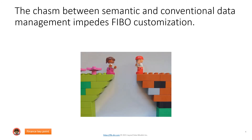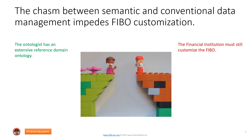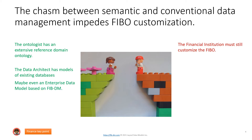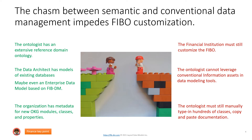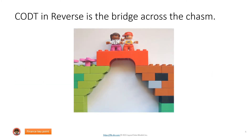There is a chasm between semantic and conventional data management, and that chasm impedes FIBO customization. The ontologist has an extensive reference domain ontology; however, the financial institution must still customize the FIBO. The data architect has models of existing databases, maybe even an enterprise data model based on FIB-DM. The ontologist cannot leverage conventional information assets in the data modeling tools. The organization has metadata for new open knowledge graph modules — classes and properties — but the ontologist must manually type in hundreds of classes, copy and paste. COD in reverse is the bridge across the chasm.